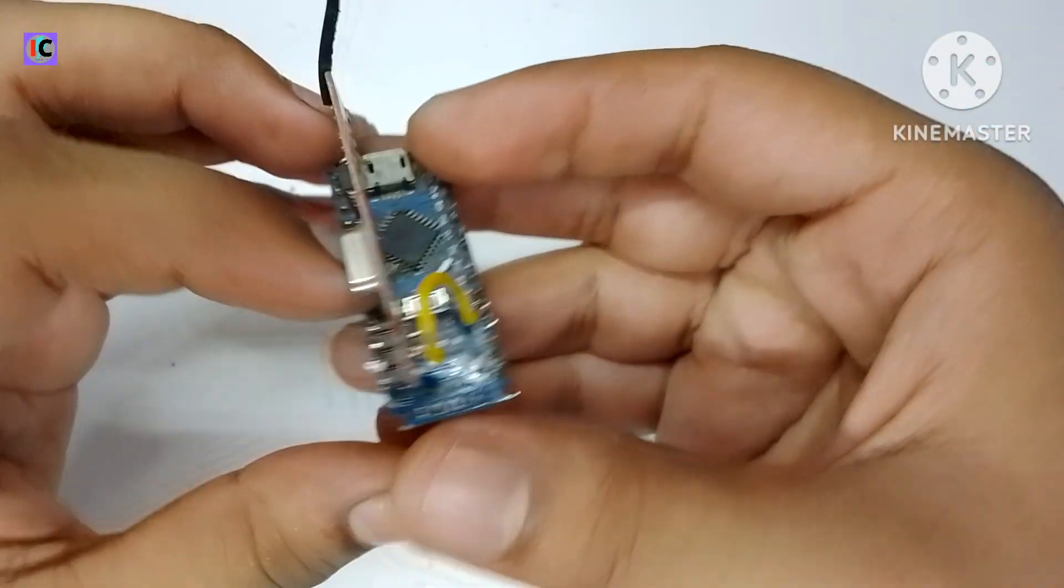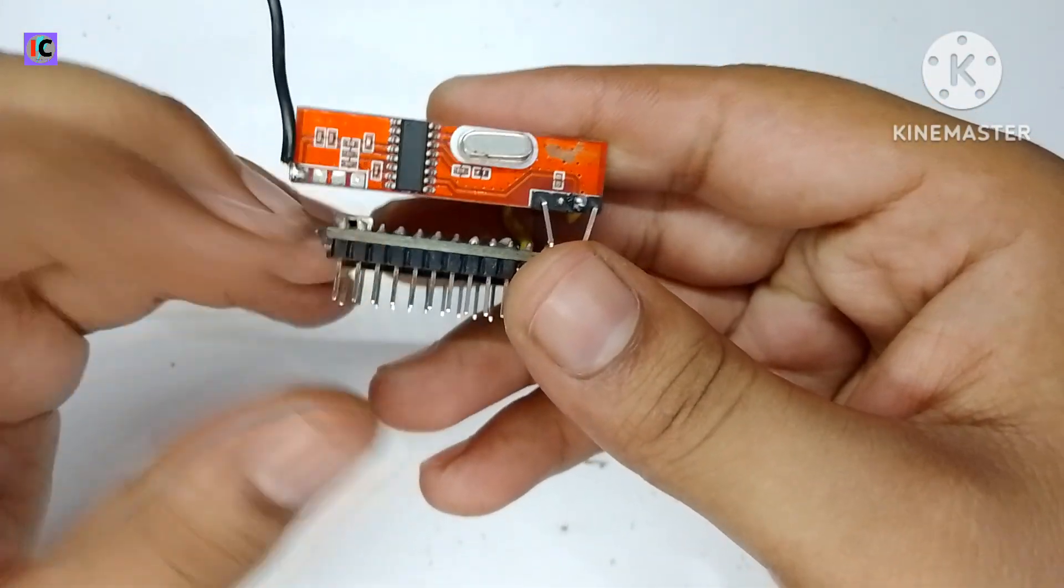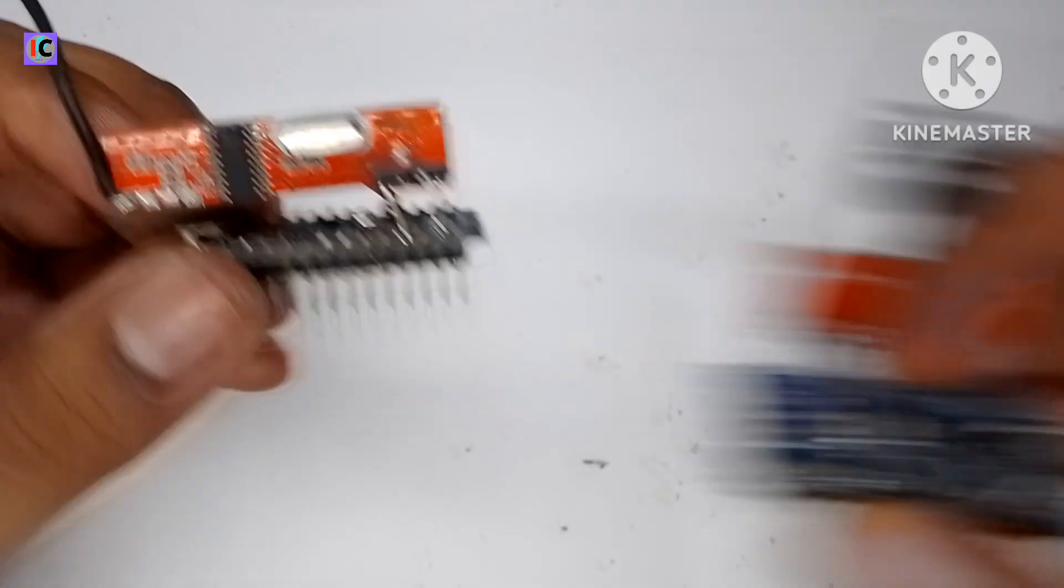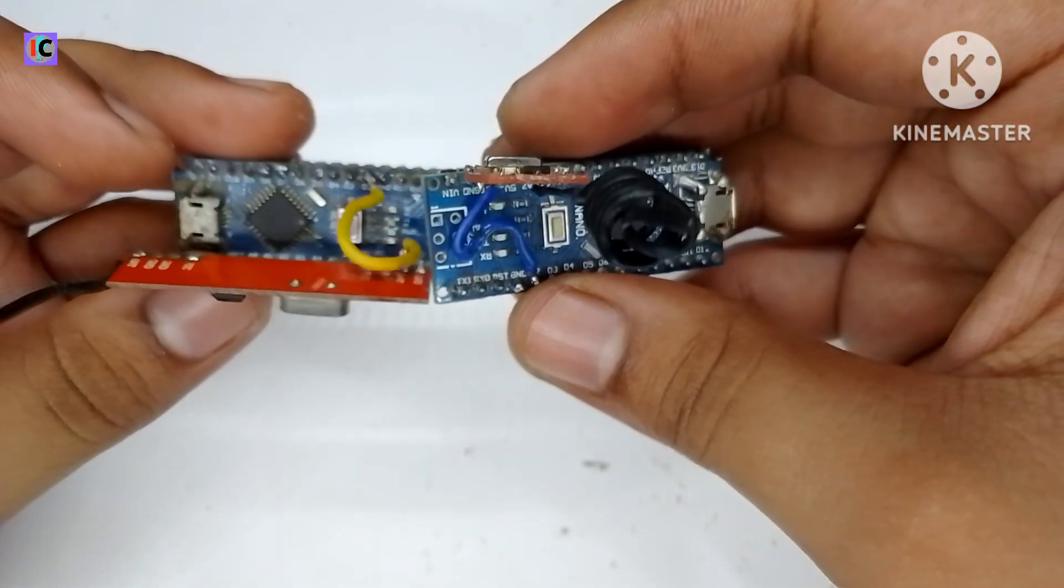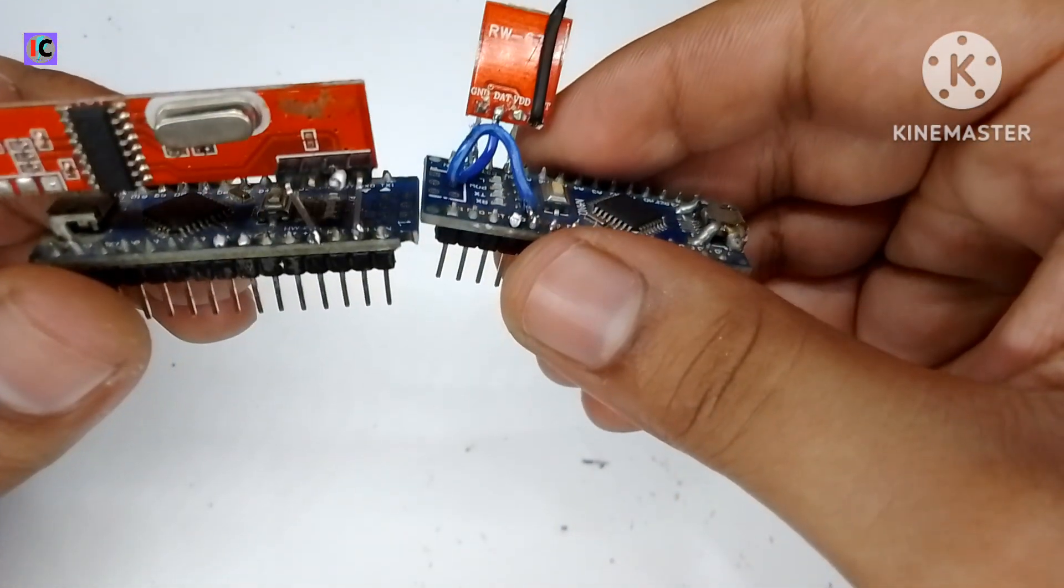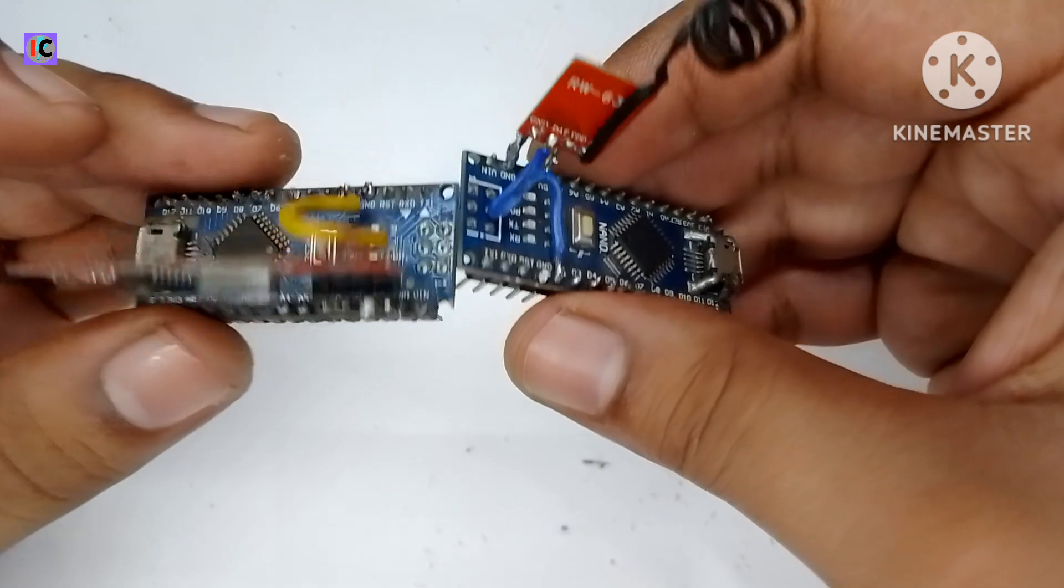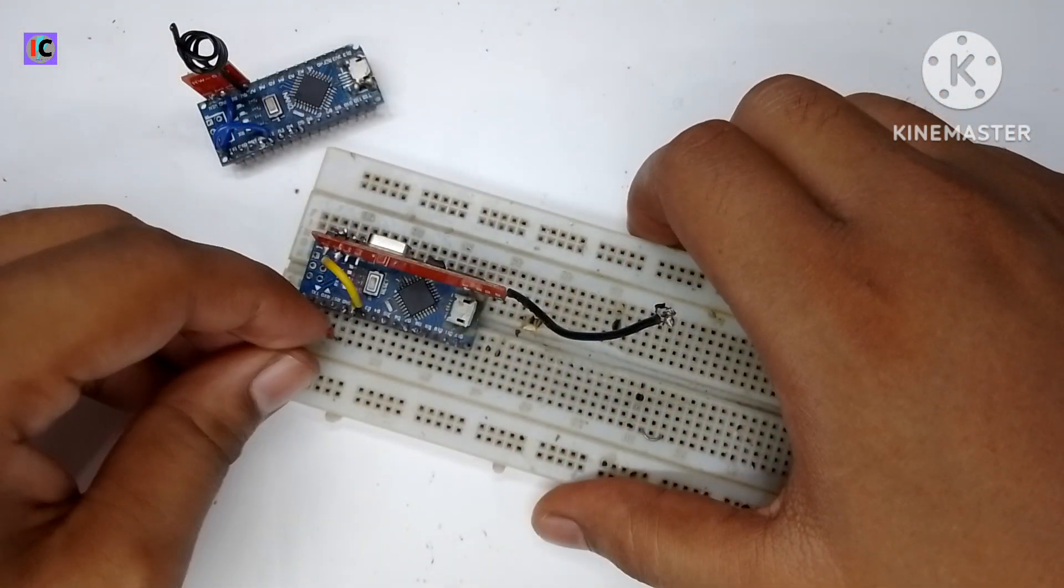Hello guys, welcome back to my channel. In this video we are going to see how to make a 5-channel RF-based transmitter receiver for RC cars and simple LED controlling. This transmitter receiver uses Arduino Nano and RF modules 433 megahertz.